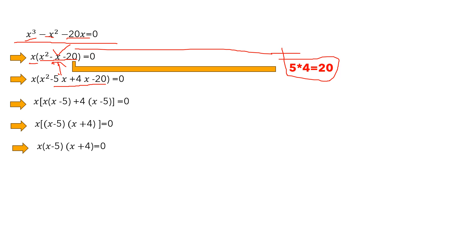In the next line, we take x common from the first two terms to get x(x minus 5), and 4 common from the last two terms to get 4(x minus 5). Then we take (x minus 5) common from both sides, giving (x minus 5)(x plus 4). So now we have x times (x minus 5) times (x plus 4) equals zero.